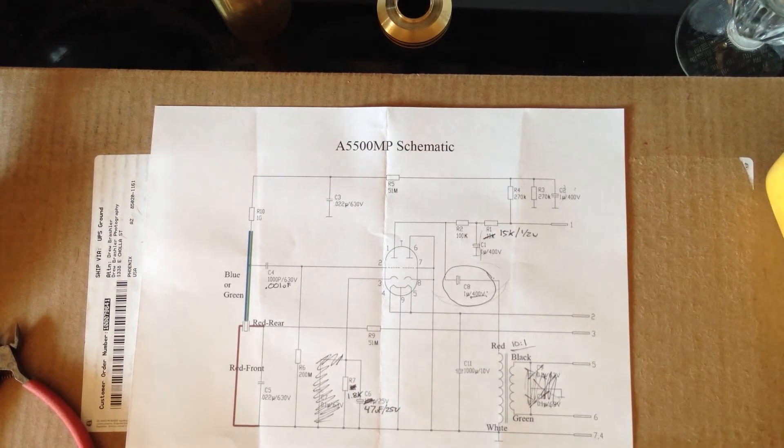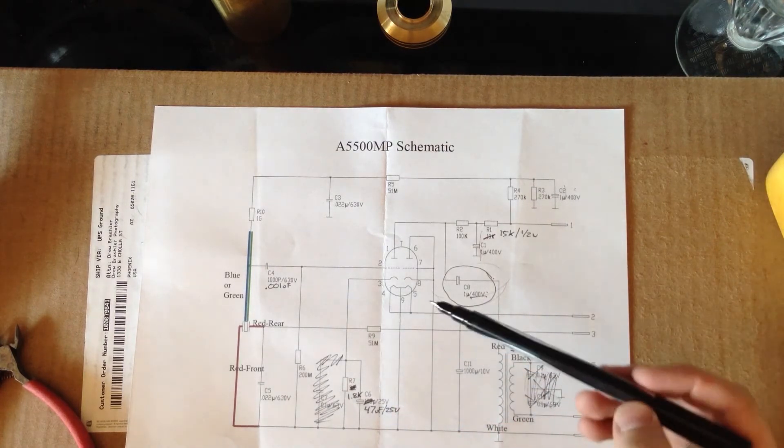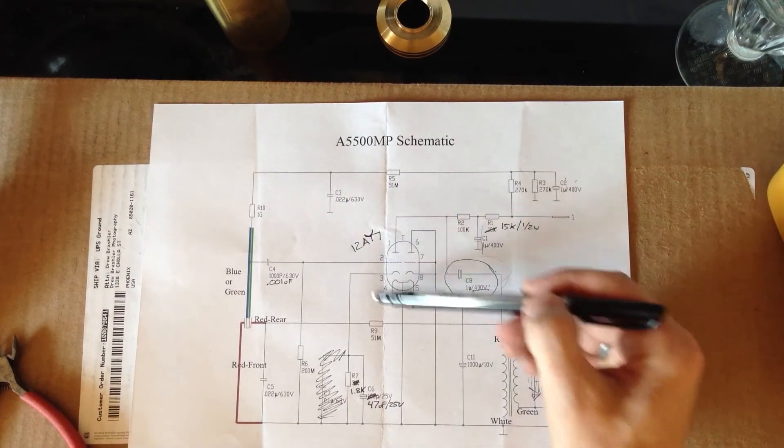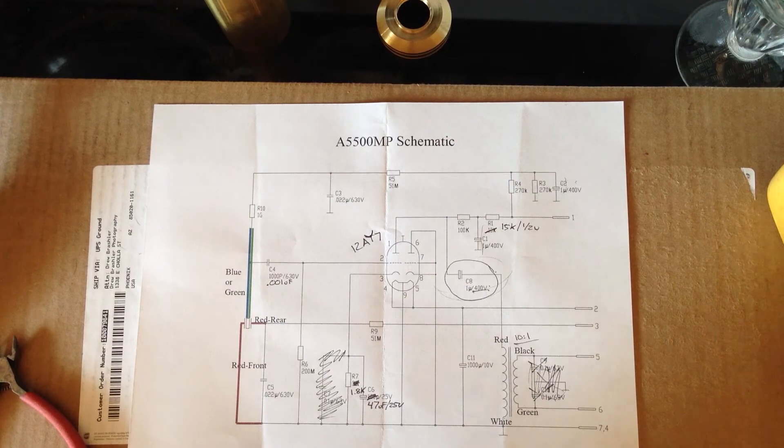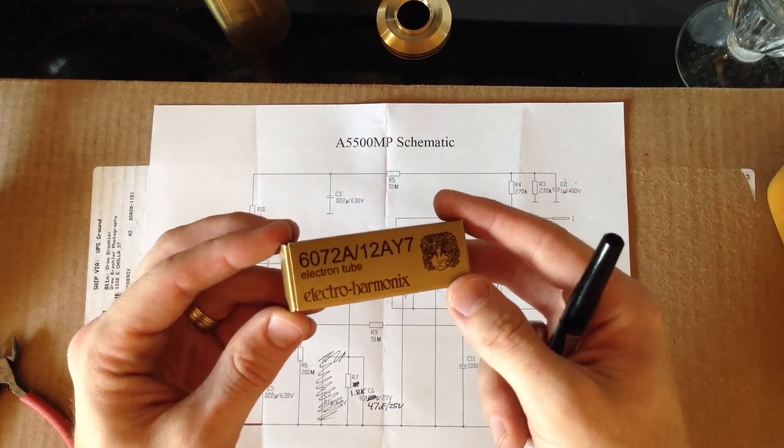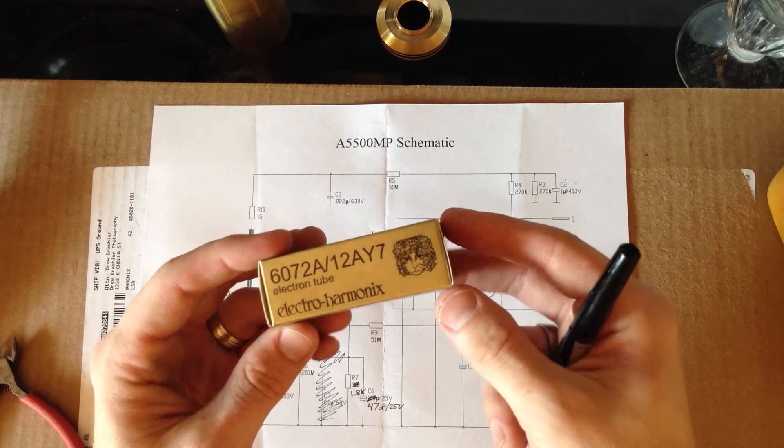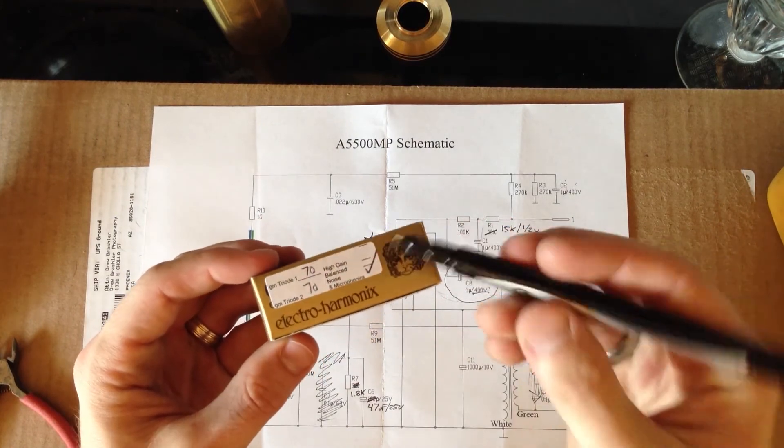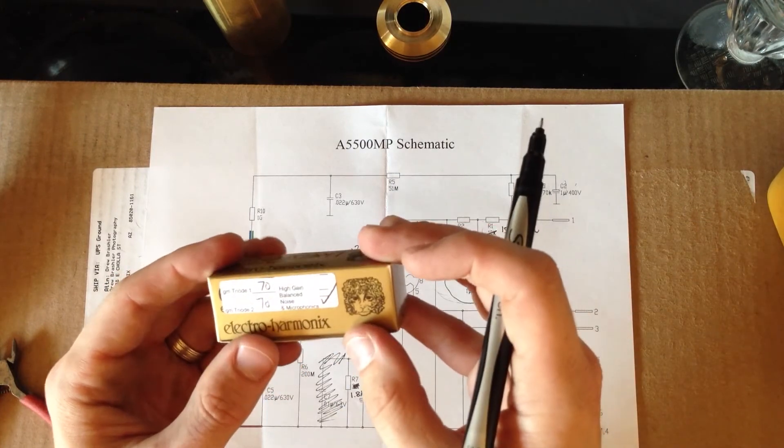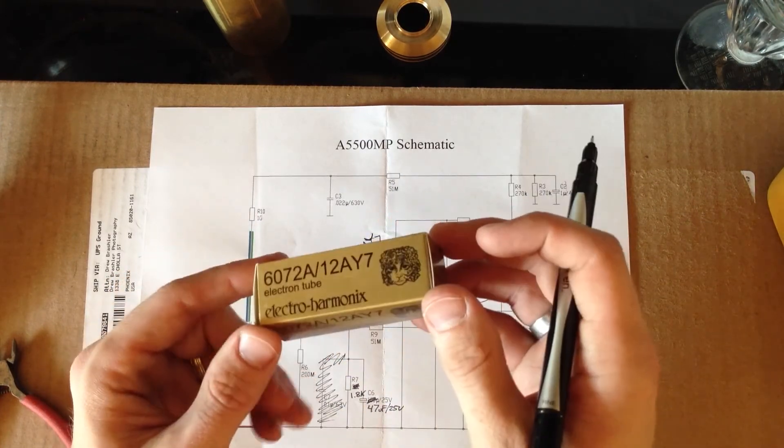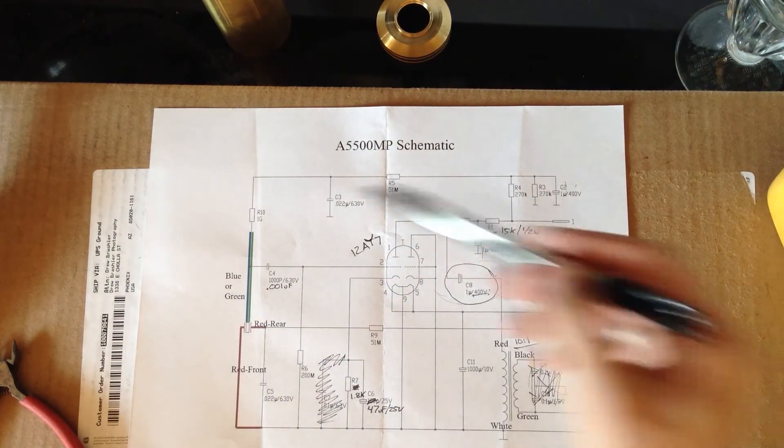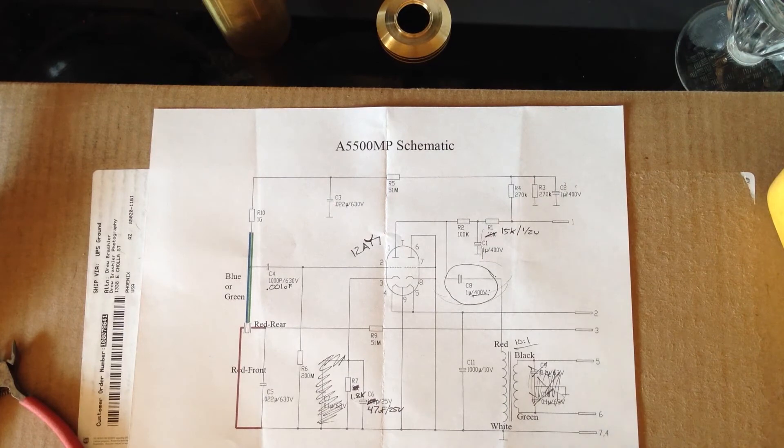The tube originally in this kit is a 12AX7, which has quite a bit of gain. And so I am changing this to a 12AY7. And I went ahead and purchased an Electro Harmonics gold pin tube for that. And this was about $27. I went ahead and had it tested for noise. And they got this from tubedepot.com. Really good place to go get a lot of the components for this. Most of the components in this I have purchased from tube depot.